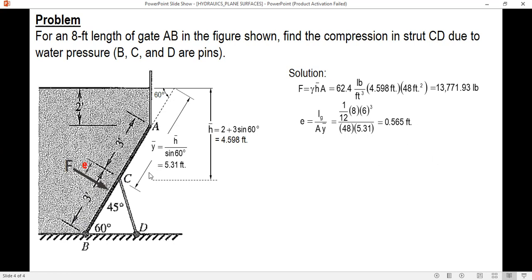So after that we can now solve for d from B. From the figure shown, d is equal to 3 feet minus e, so 3 minus e. d is 2.435 feet. Now we will now sum up moment about B.